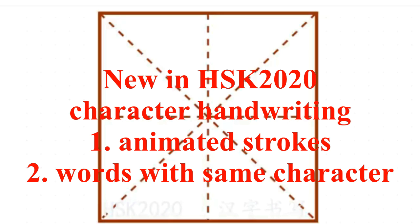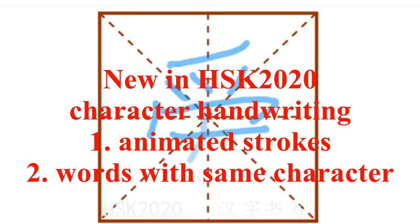Let's write it first. 爱, love. 撇, 点, 点, 撇. This is the top part. The bottom part is 有, 朋友的有. 爱, meaning love.